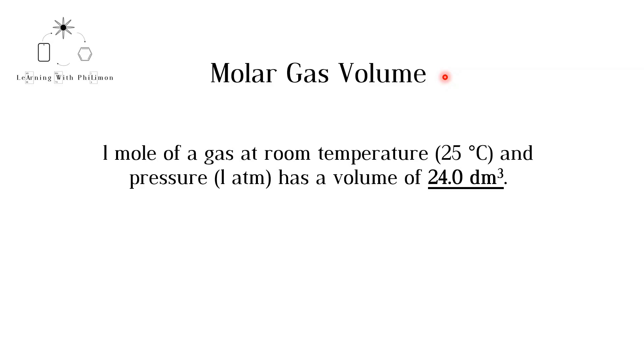According to Avogadro's law, equal moles of different gases will have the same volume at the same temperature and pressure. For example, 1 mole of a gas at room temperature and pressure has a volume of 24.0 decimeters cubed.